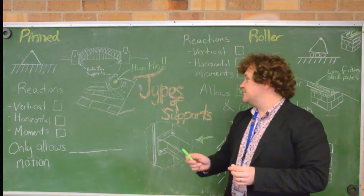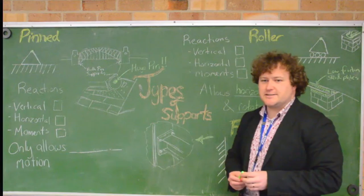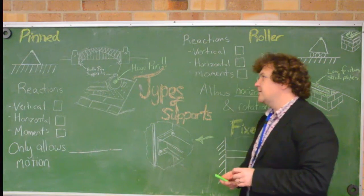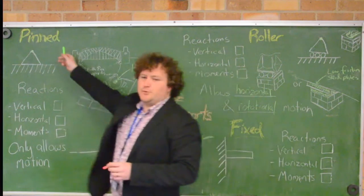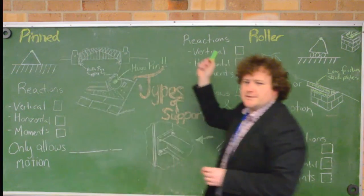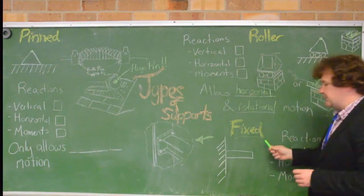So there's three types of supports that are used in civil structures, the three main ones that we're going to look at today. And they are pin supports, roller supports and fixed supports.